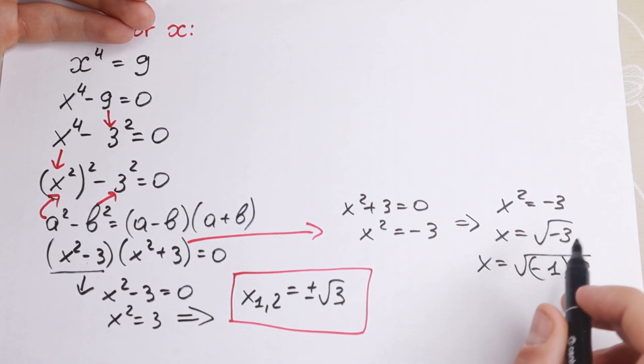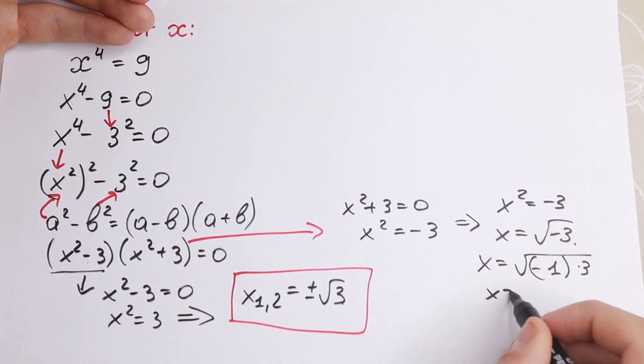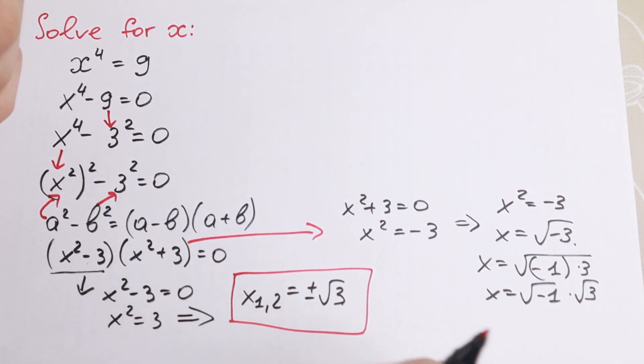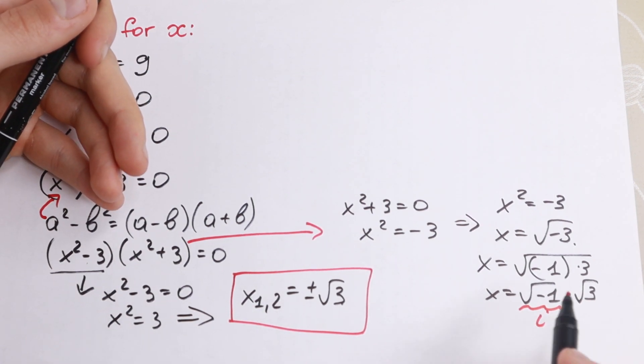So we can write this minus 3 as square root of minus 1 times 3. And we need to know the rule. We can write it as x equal to square root of minus 1 times square root of 3. And if we are talking about the complex number this is equal to i.